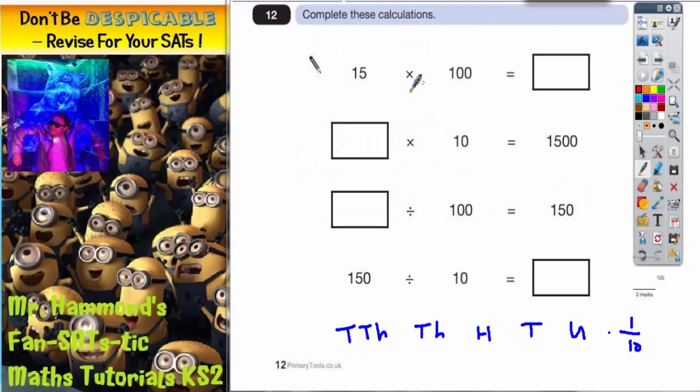Okay, question 12. What some calculations to complete. Some are easier than others. So first one, 15 times 100. That's nice and easy. 15 lots of 100, we're going this way. This is going to be 1500, which is otherwise known as 1500. Job done.